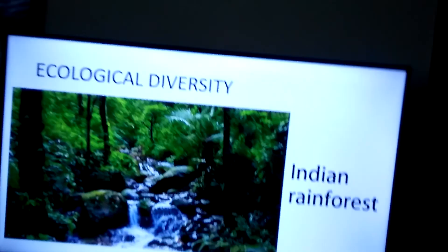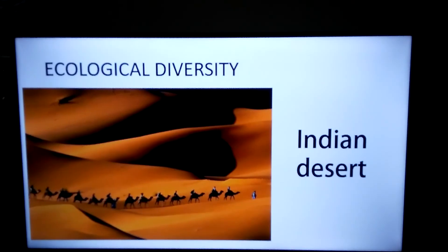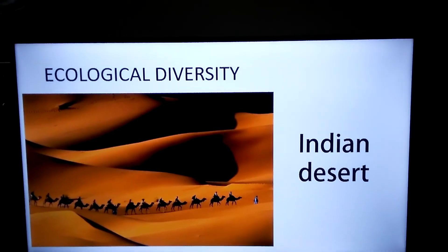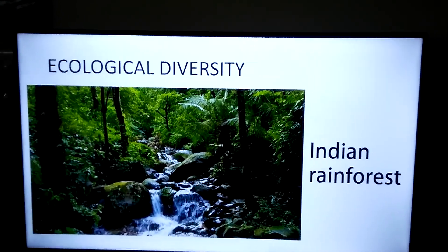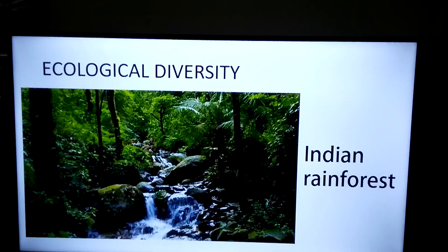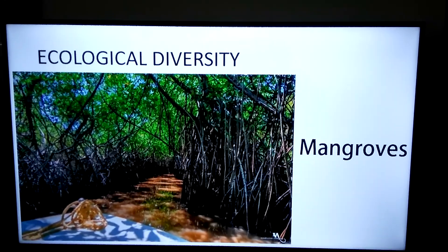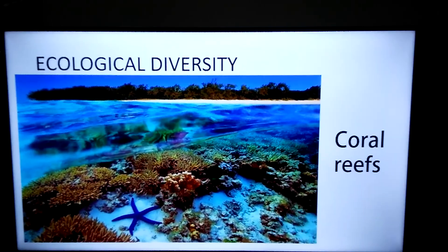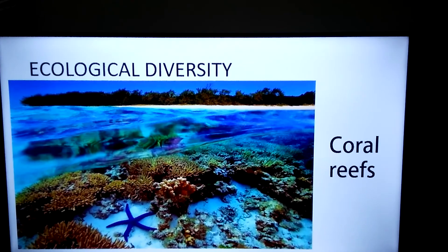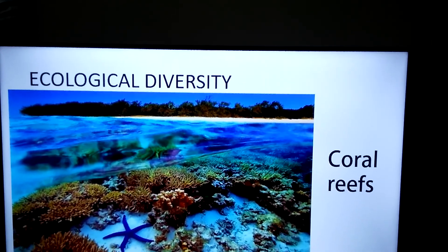For example: estuaries, forests, deserts, Indian rainforests, mangroves, and coral reefs. All these are different ecological regions or ecosystems found in India, so ecosystems are diverse across areas like India.